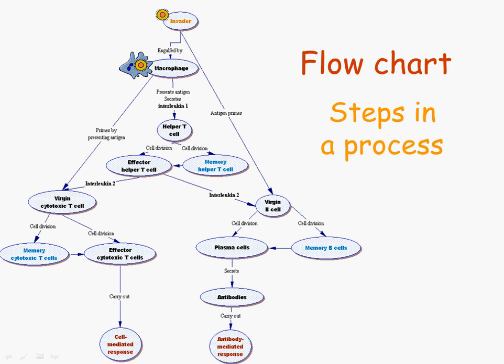Here are some examples. This is one you're probably all familiar with, and that is a flowchart. A flowchart is simply steps in a process where one thing follows another. You can see in this flowchart that there's an invader that comes into the body and there are all kinds of immune system reactions that happen after that. By drawing it out in a flowchart we can see what triggers what, and by looking from side to side we can see that there are multiple things going on at one time.